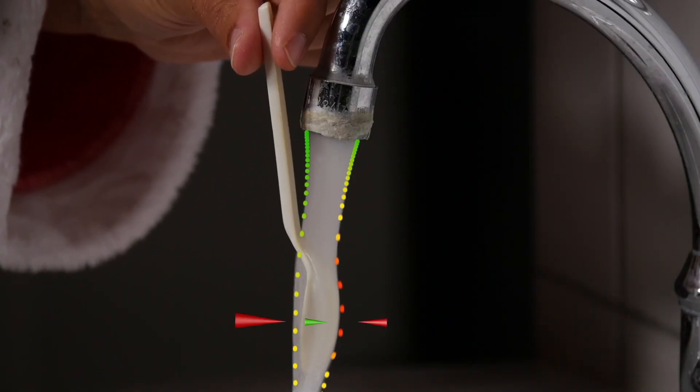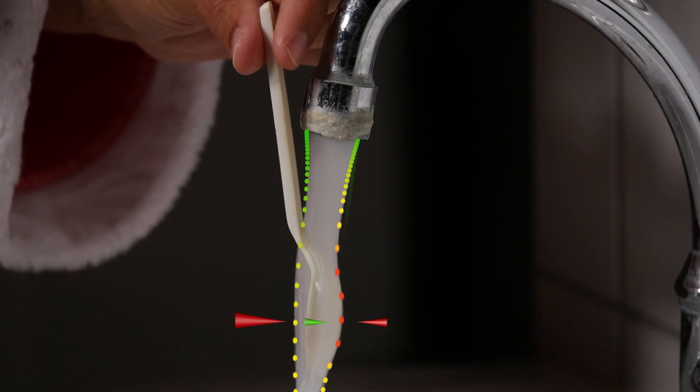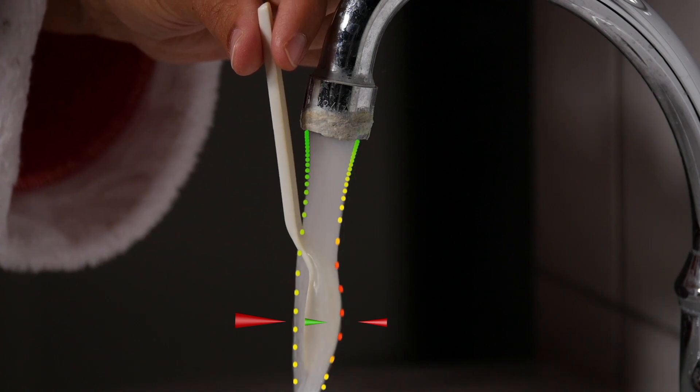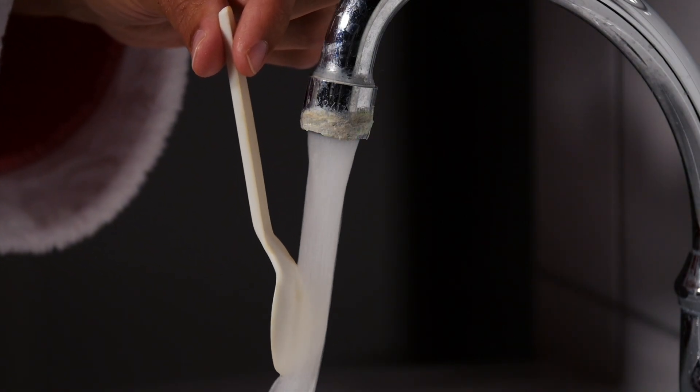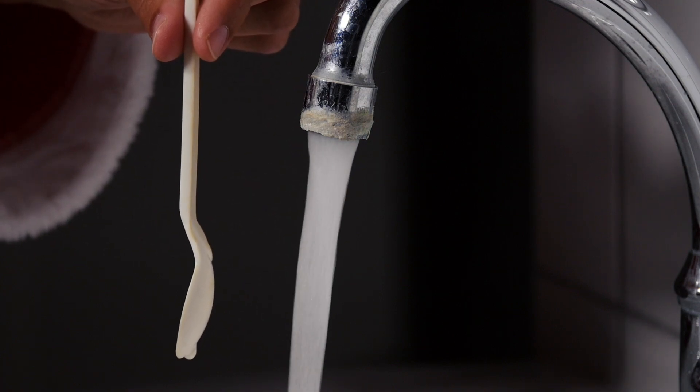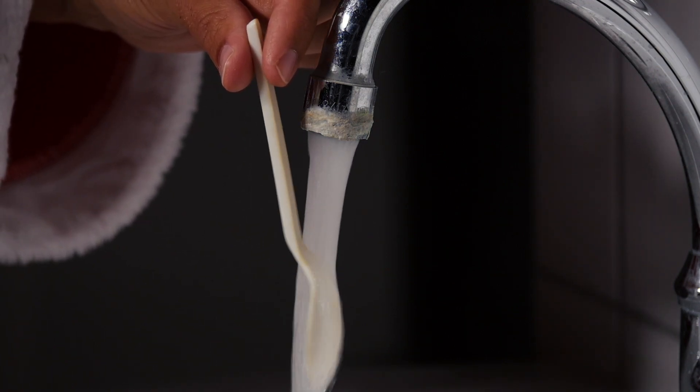It is answer D. The spoon is drawn into the water jet. The water jet has a longer path around the bulbous side of the spoon and must flow a little faster there. Due to the Bernoulli effect, the pressure of the water jet on the spoon is reduced, while the pressure on the other side of the spoon remains unchanged.